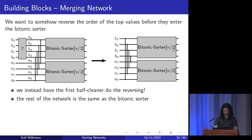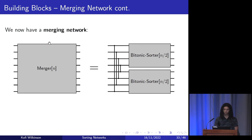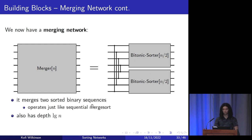By using this technique, we've reversed the top half of the output of the first half-cleaner. This is not a problem because the reverse of a bitonic sequence is still bitonic, so we can safely pass it into the bitonic sorter above. What we've just constructed is a merging network: it takes two sorted binary sequences and returns one merged sorted output, just like the merge routine in merge sort. This also has depth log(n) because all comparisons in the modified first half-cleaner can be done in parallel.